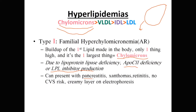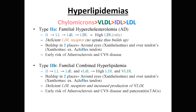Because you have high chylomicrons, you have lots of triglycerides. High circulating triglycerides can cause pancreatitis. You'll also see xanthomas and retinitis, but no cardiovascular risk because LDL is not elevated. On electrophoresis, you'll see a very thick, milky cream layer.